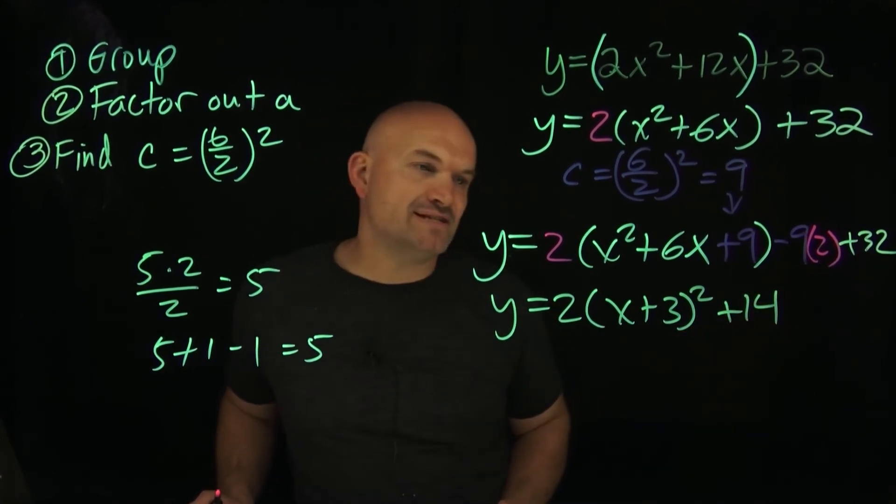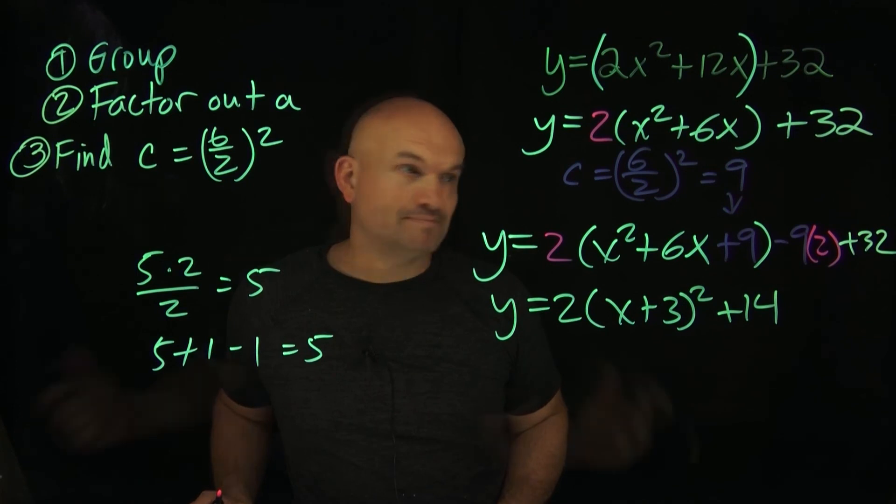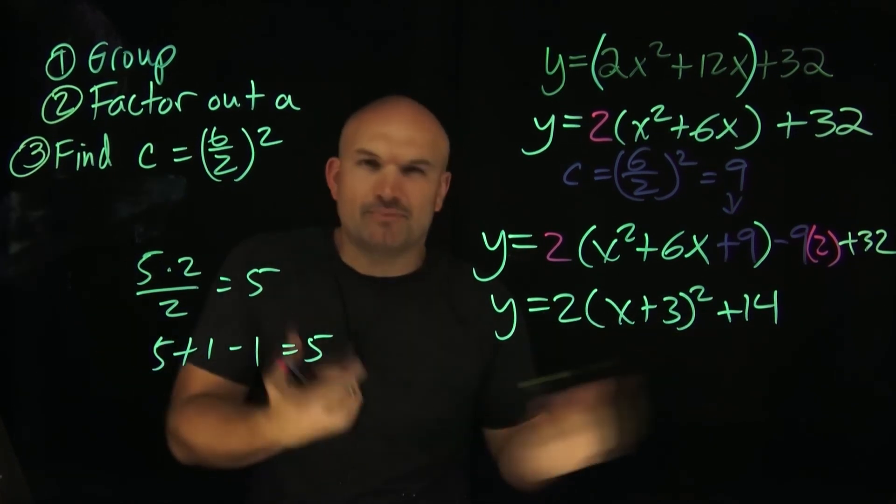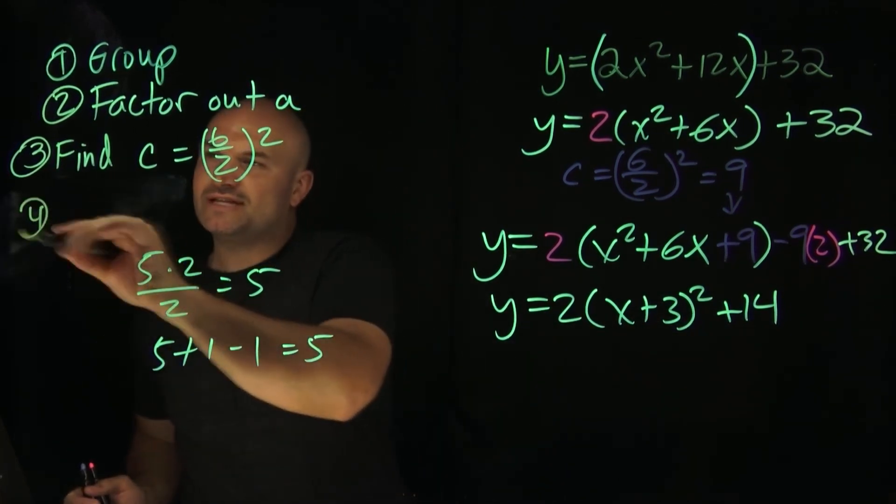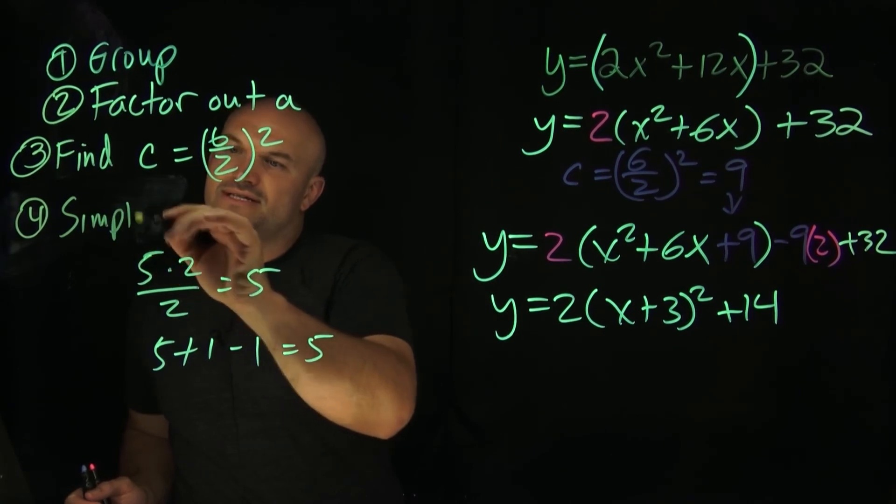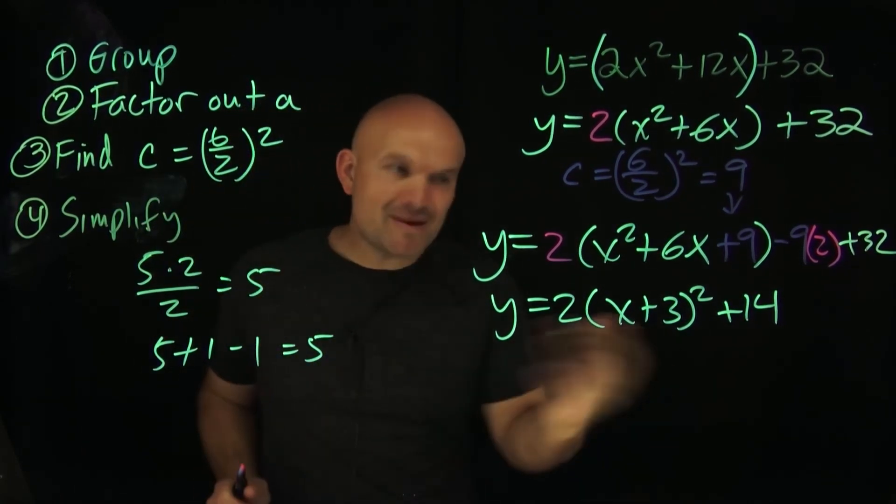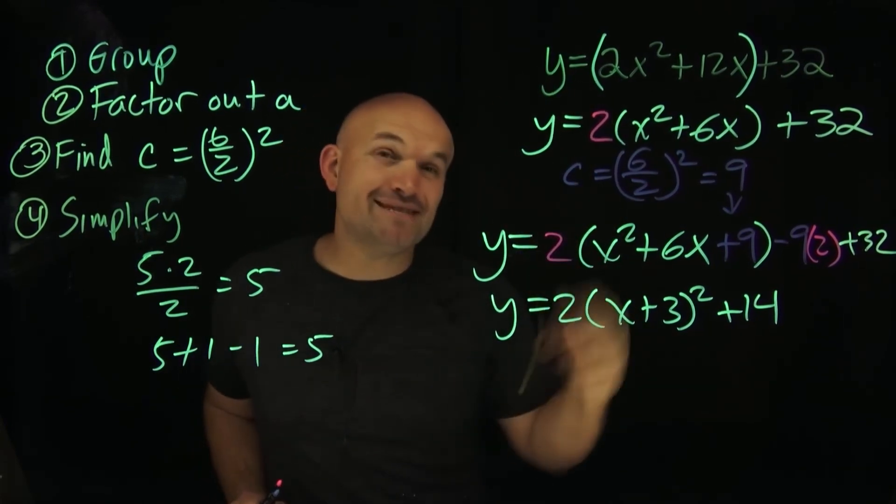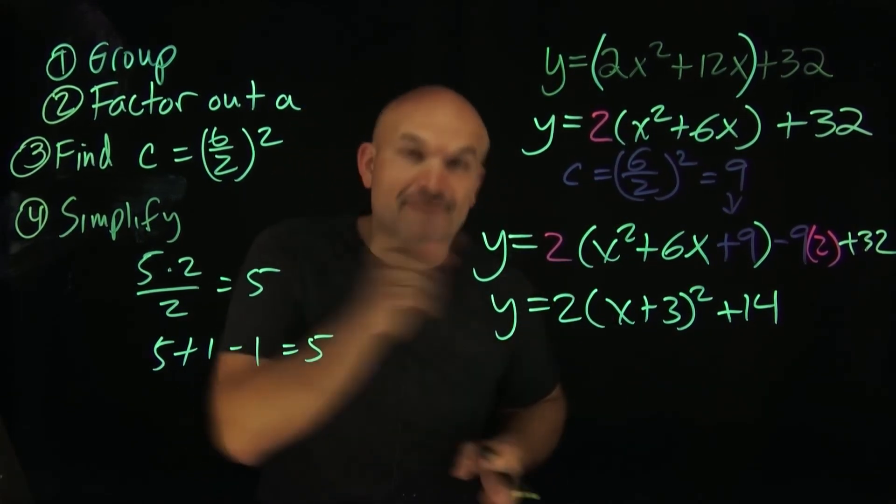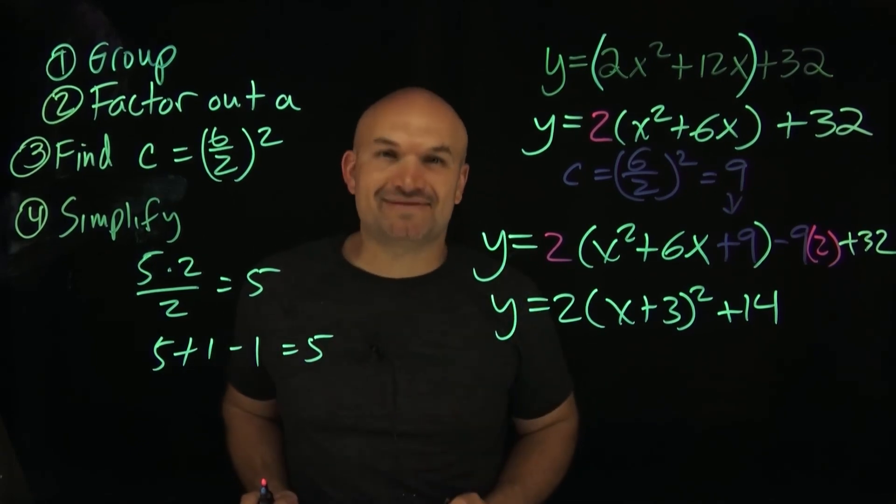And now you can see that we have this in our vertex form, which I forgot to add in. The last step, step number 4, is just to simplify. Now, the problem with this one is there's no fractions. It was a little difficult with the coefficient of 2. But if you want to see me do an example when I have fractions of completing the square, that's going to be in the next video.